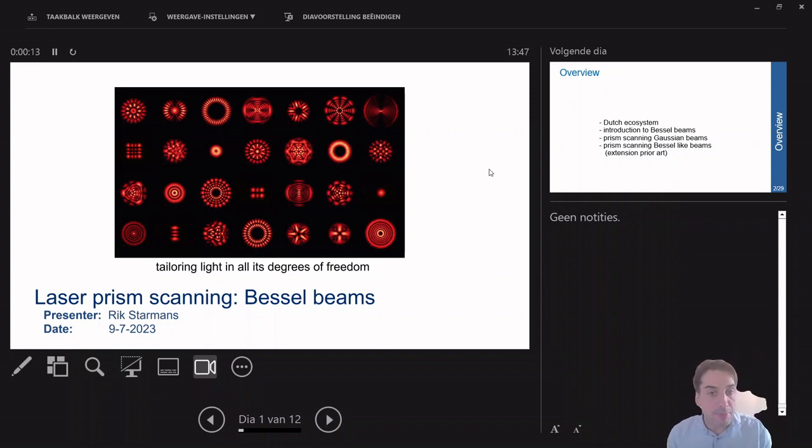So far the laser prism scanner worked with a Gaussian beam. If you look at the intensity distribution of a Gaussian beam, it's very bright at its center and then fades out when you move to the edges.